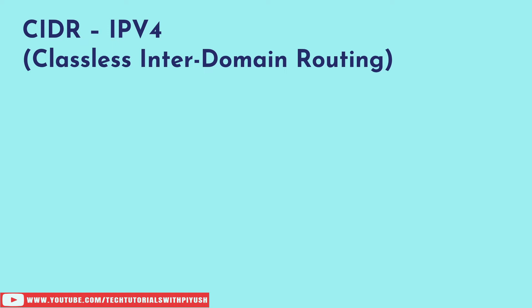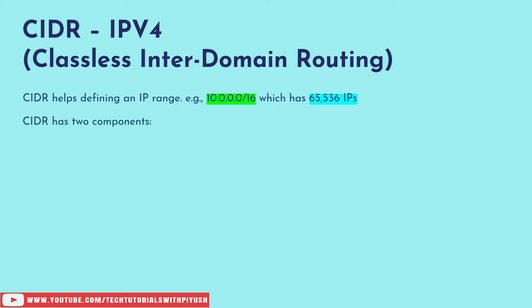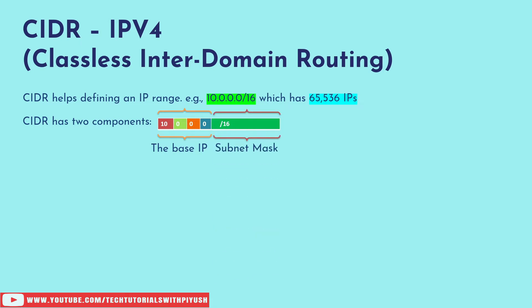Let's have a look at the basics of IP addressing. We'll start with CIDR for IPv4, which is Classless Intradomain Routing. It helps define an IP range — for example, 10.0.0.0/16, which has 65,536 IPs. It has two components: the base IP, which is 10.0.0.0, and the subnet mask, which is /16. The combination of these two components defines a CIDR range, inside which there could be multiple IPs.